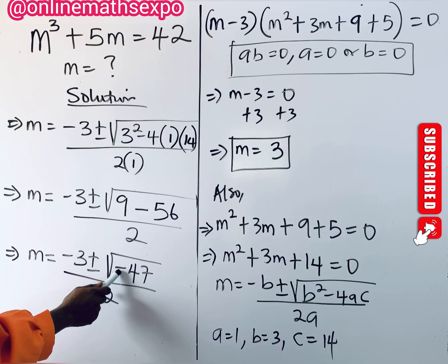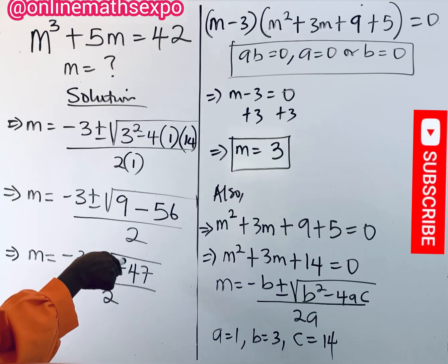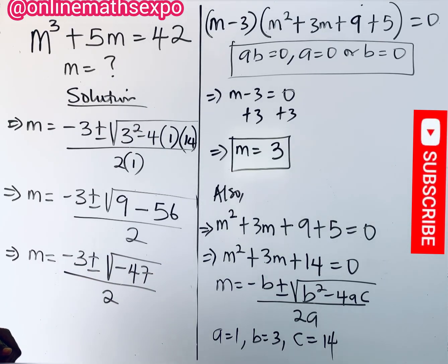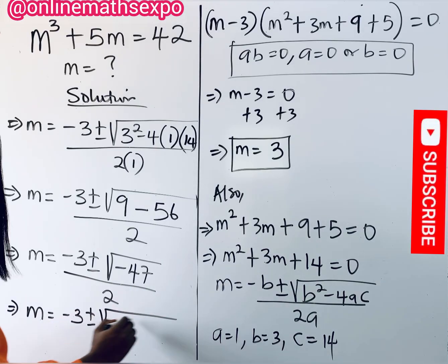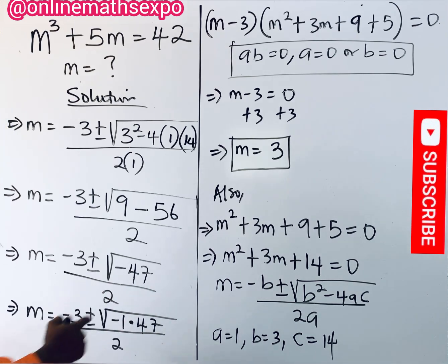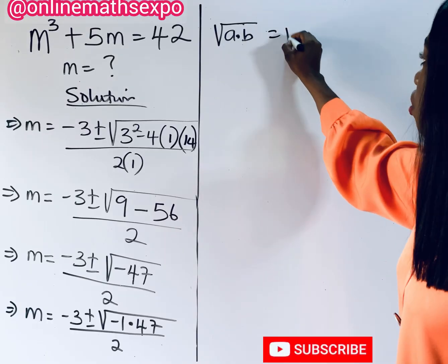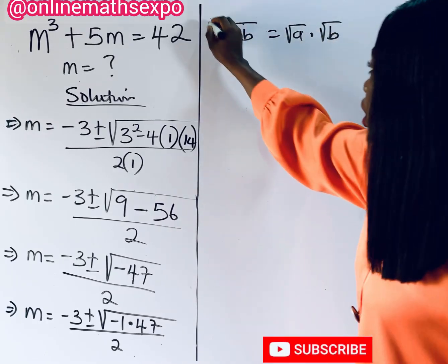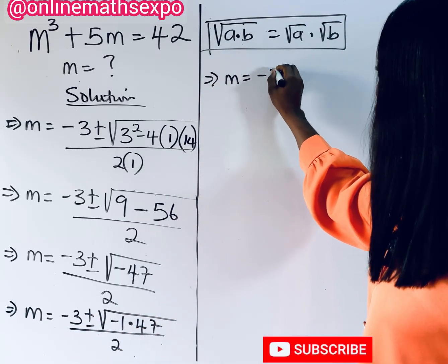You observe there is a negative sign inside the square root, which leads us to a complex solution — the square root cannot contain a negative number for a real solution. We rewrite negative 47 as negative 1 multiplied by 47. Recalling that the square root of a product equals the product of the square roots, we split this as square root of negative 1 times square root of 47.